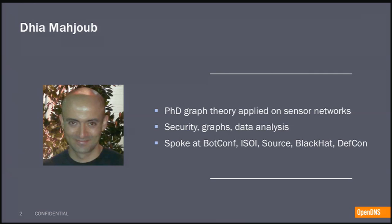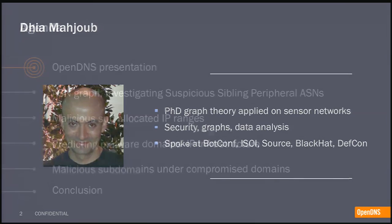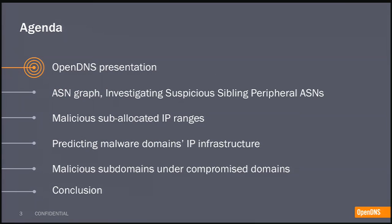My main focus is on analyzing the DNS traffic we have and all kinds of IP space we are able to get our hands on, typically like routing tables and that kind of thing. So, how about the agenda? I'll start with a brief introduction about OpenDNS, like some of the technical aspects. And then I'll dive directly into the research aspect. We'll discuss the ASN graph and then how we investigate certain suspicious neighborhoods in it. And we'll introduce a new concept we call sibling peripheral ASNs.